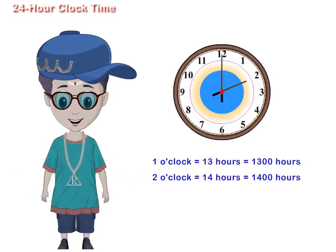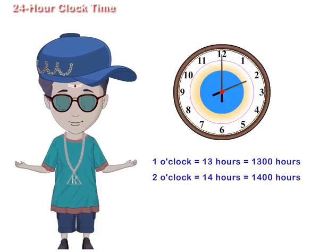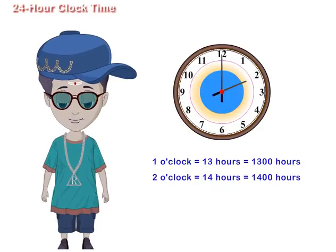to express p.m. time in hours, we simply add 12 to the given number of hours.